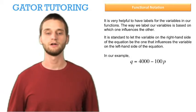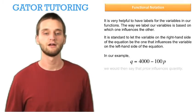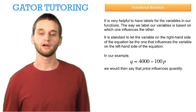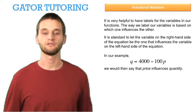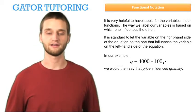In our example, Q equals 4000 minus 100P. We would say that price influences quantity, since price is on the right-hand side and quantity is on the left-hand side.